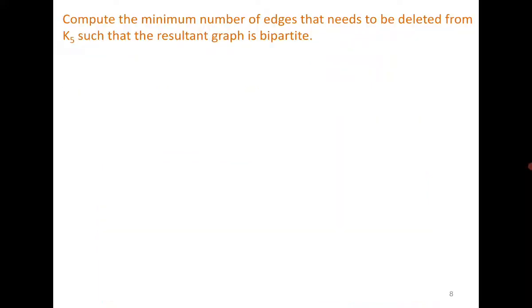Let's try a question. Compute the minimum number of edges that needs to be deleted from K5 such that the resultant graph is bipartite. One approach is that you draw K5, start deleting edges until it has no odd cycles because in K5 there are a lot of triangles. So you need to delete edges such that there are no odd cycles. But if you use this approach, the problem is how do you know that you have deleted the minimum number of edges? What is the mathematical proof? The other approach is that from K5 if you have to delete the minimum number of edges then you should look for the bipartite graph with maximum number of edges which means the complete bipartite graph.